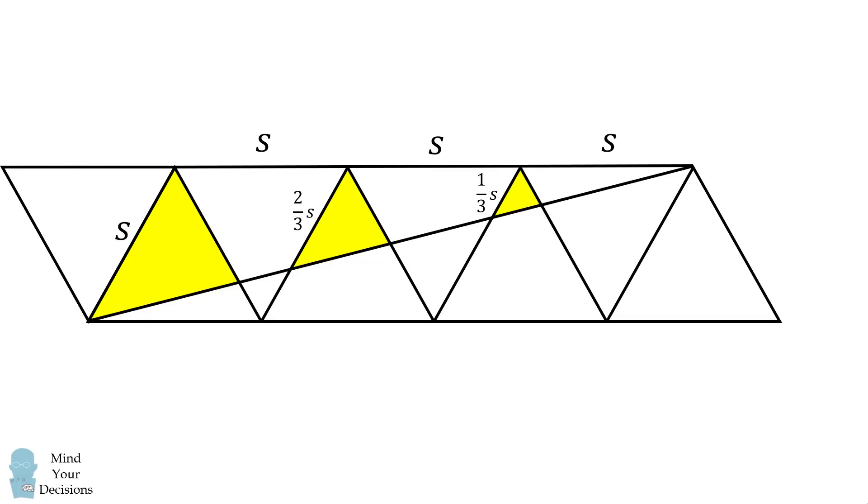Now construct one more equilateral triangle. This side length will also be equal to s. The line segments going the other way will be in parts of four. So, the largest triangle in yellow will have a side length this way that's equal to three-over-four multiplied by s, the middle triangle will be equal to two-over-four multiplied by s, and the smallest will be one-over-four multiplied by s.